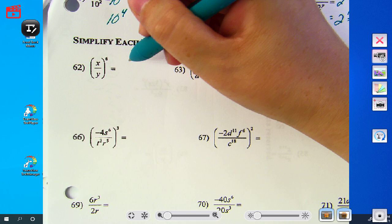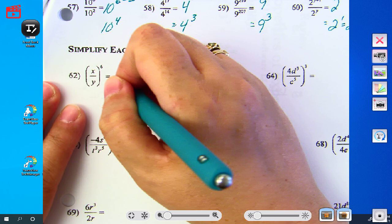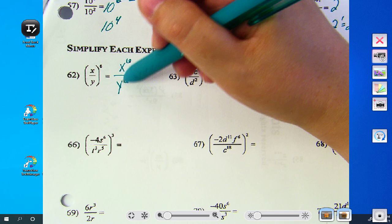Again, even though it's a division problem, the exponent goes to the top and the bottom. These are different variables, so I can't simplify them at all.